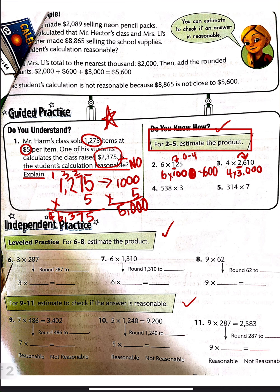And then let's look down at 6. So leveled practice for 6 through 8, estimate the product. So round 287. So 287, we're going to round it to the nearest 100. So we look next door. That's an 8. 8 is between 4 and 0. So that 2 becomes a 3. Everything to the right becomes 0. So we round 287 to 300. Move this 300 to right here. 3 times 300 is 900. Super easy. Pause this. And now you work 7 and 8. After you've worked 7 and 8, come back. And then I'll do 9 for you. And then you'll do 10 and 11.